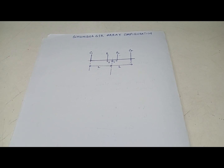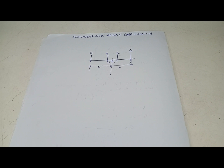Welcome to GeoTutors. This is the second video in our series. In the first video we covered the Wenner array and its electronic configuration. Now for the second array, we will do the Schlumberger array configuration, which is the proof of the geometric factor.